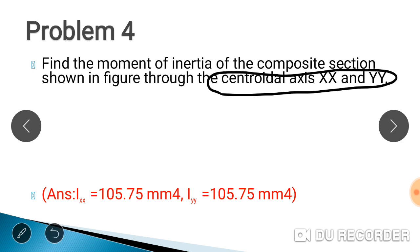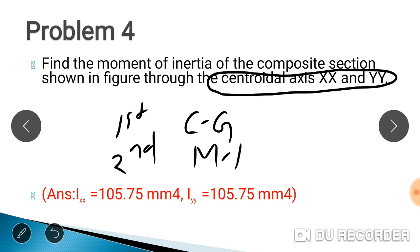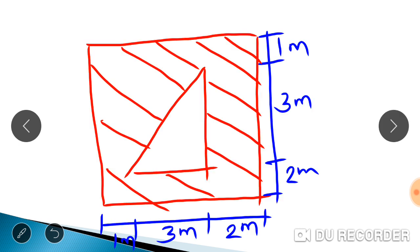In our question, the centroidal axis is where we find the moment of inertia. First step: we need to find the centroid. Second step: we need to calculate the moment of inertia. Once we have the centroid, we then apply the moment of inertia calculation about that centroidal axis.